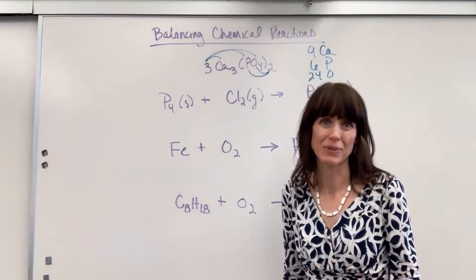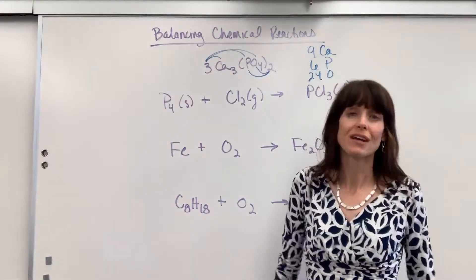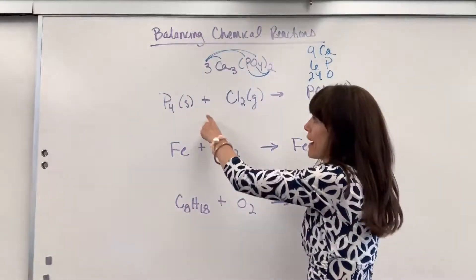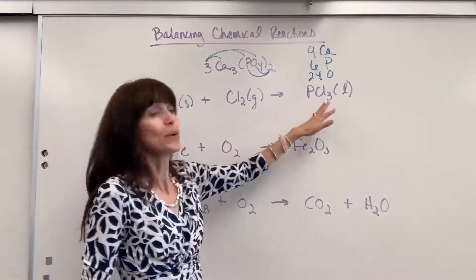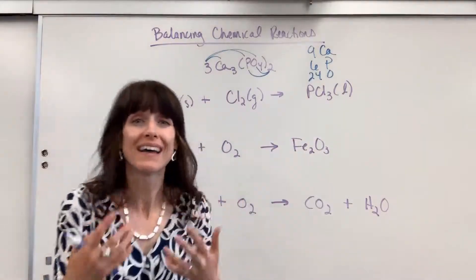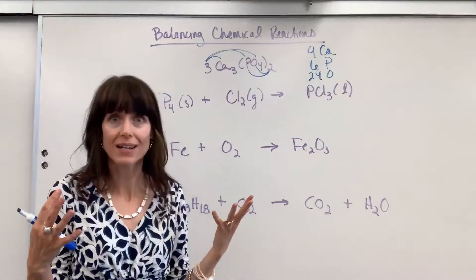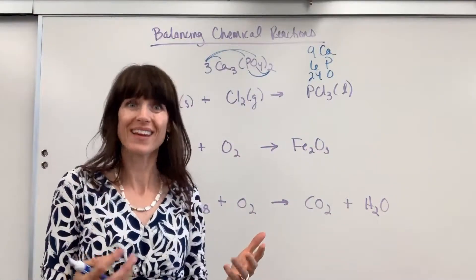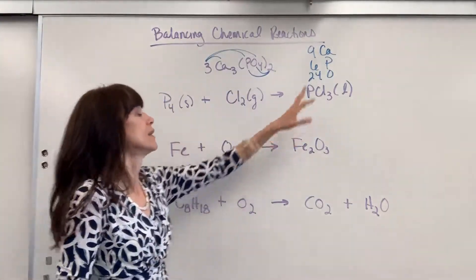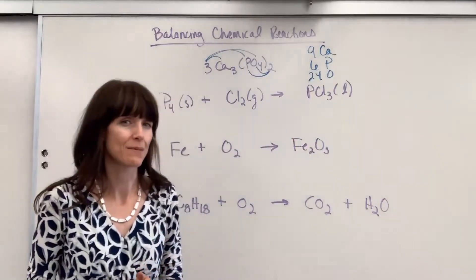Now here's the premise on balancing chemical equations is conservation of mass. The number of atoms we start with has to be the same number of atoms we end with. Because you and I can't create atoms out of nothing. And we can't take atoms and destroy them into absolutely nothing. So the atoms we begin with, that has to be the same number of atoms we end with.